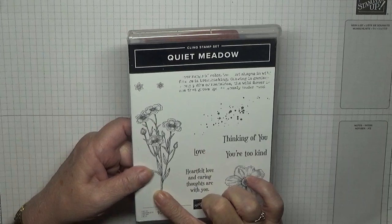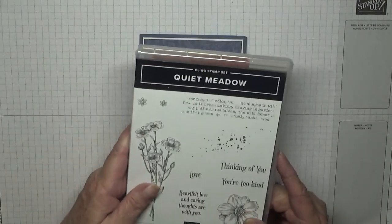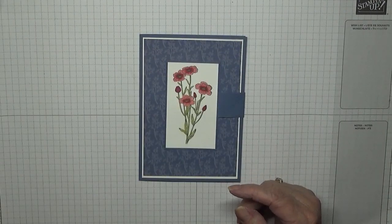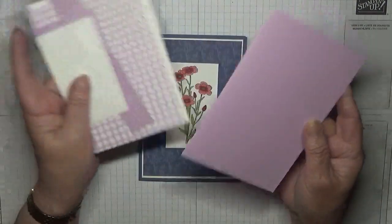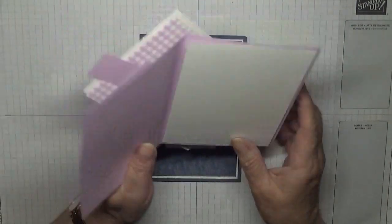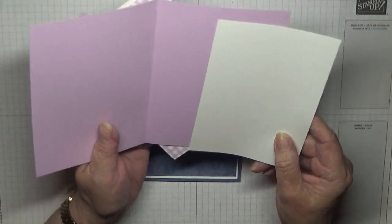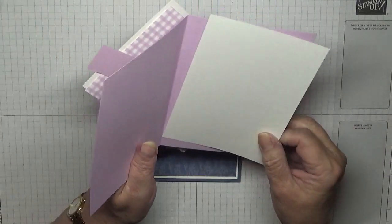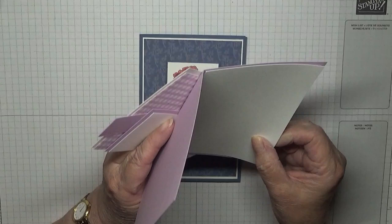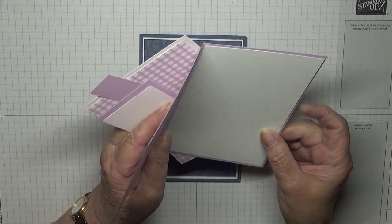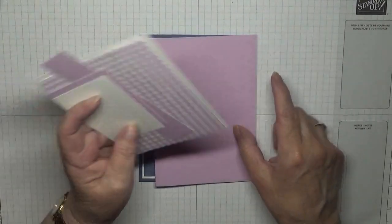I cut off a little bit of the stalk because I didn't want it all. For the card, I've got Fresh Freesia eight and a quarter by five and seven eighths scored at four and one eighth. I've got two pieces of white card at five and five eighths by three and seven eighths, one for the inside, one for the outside.